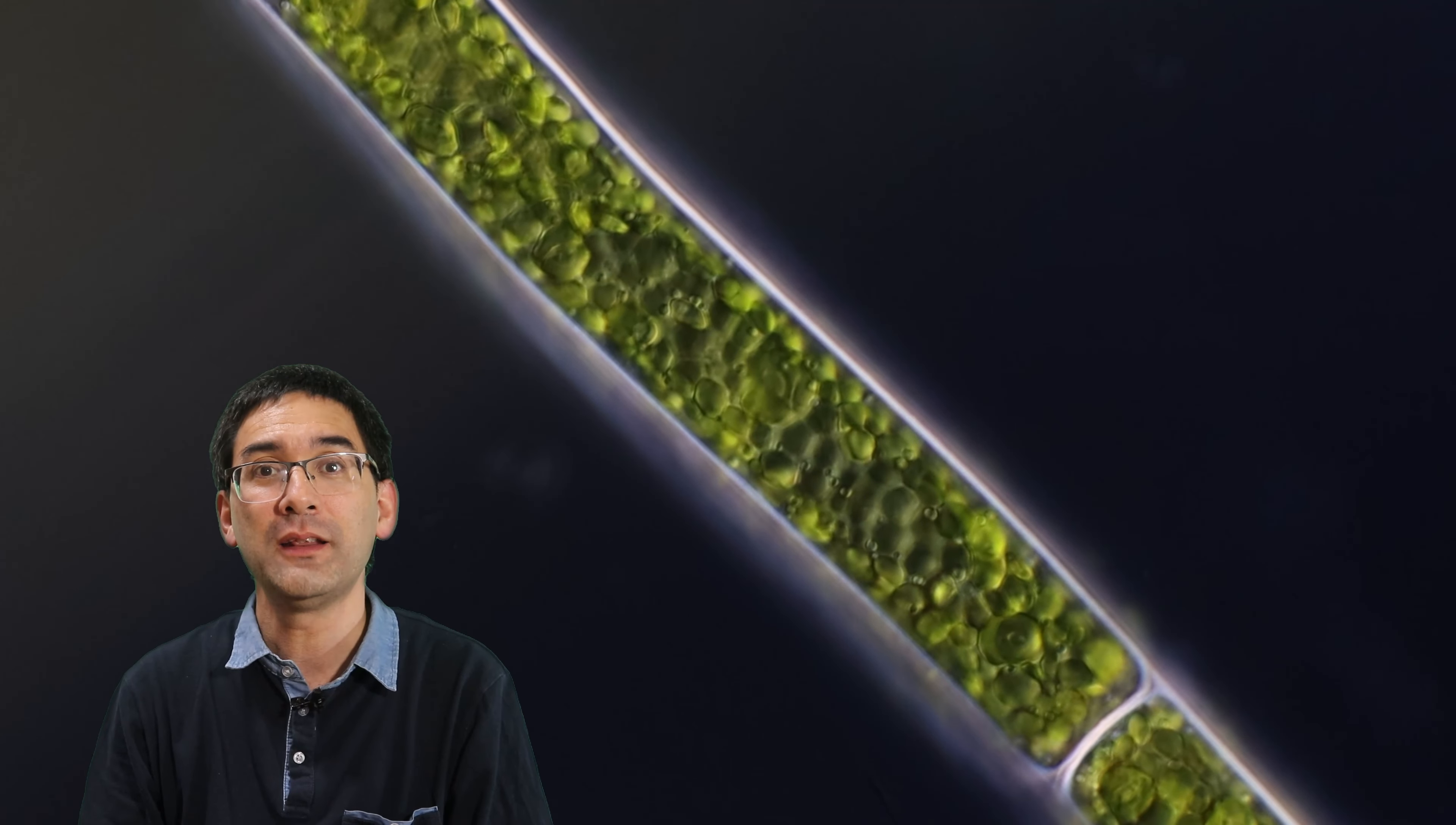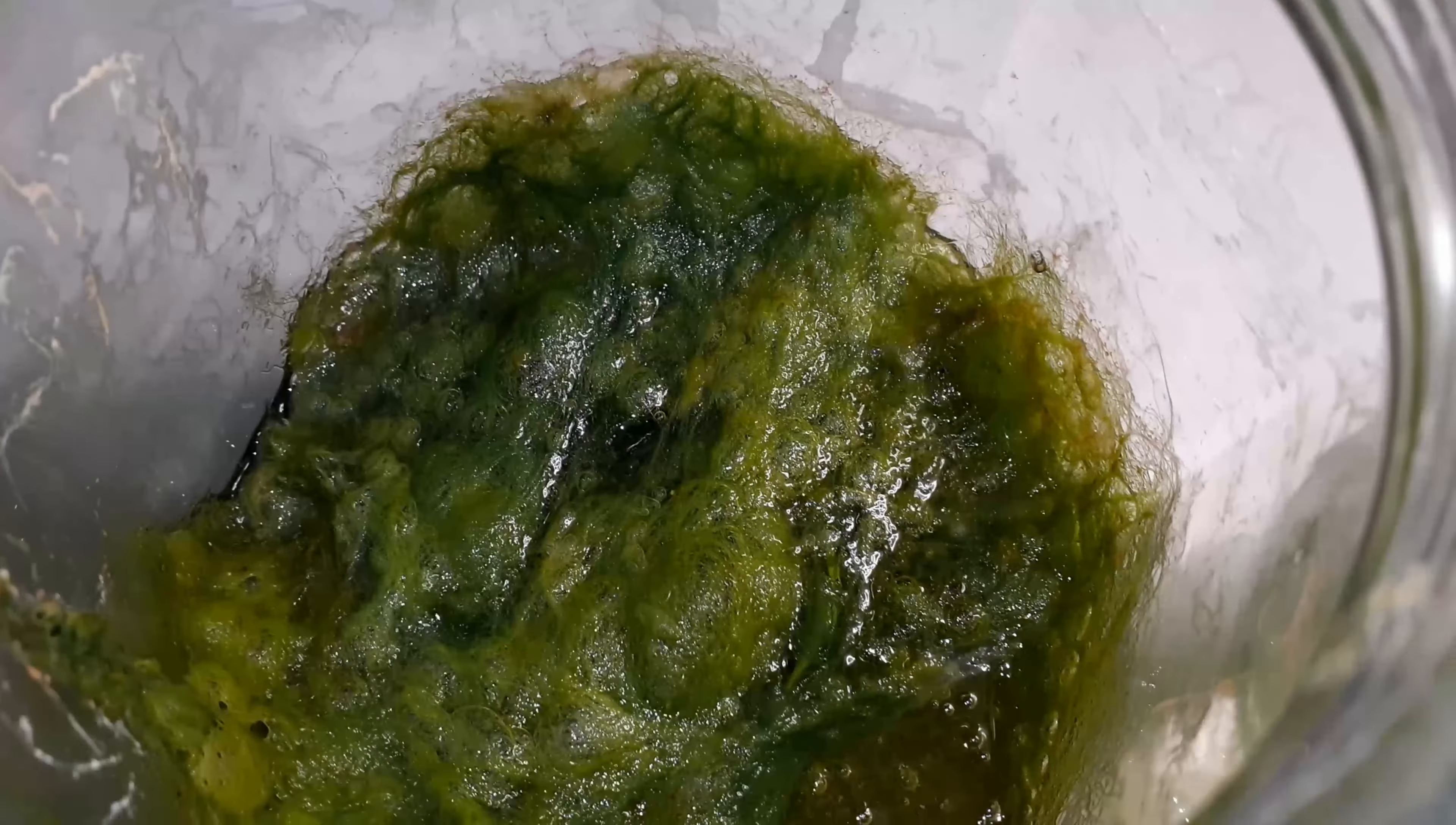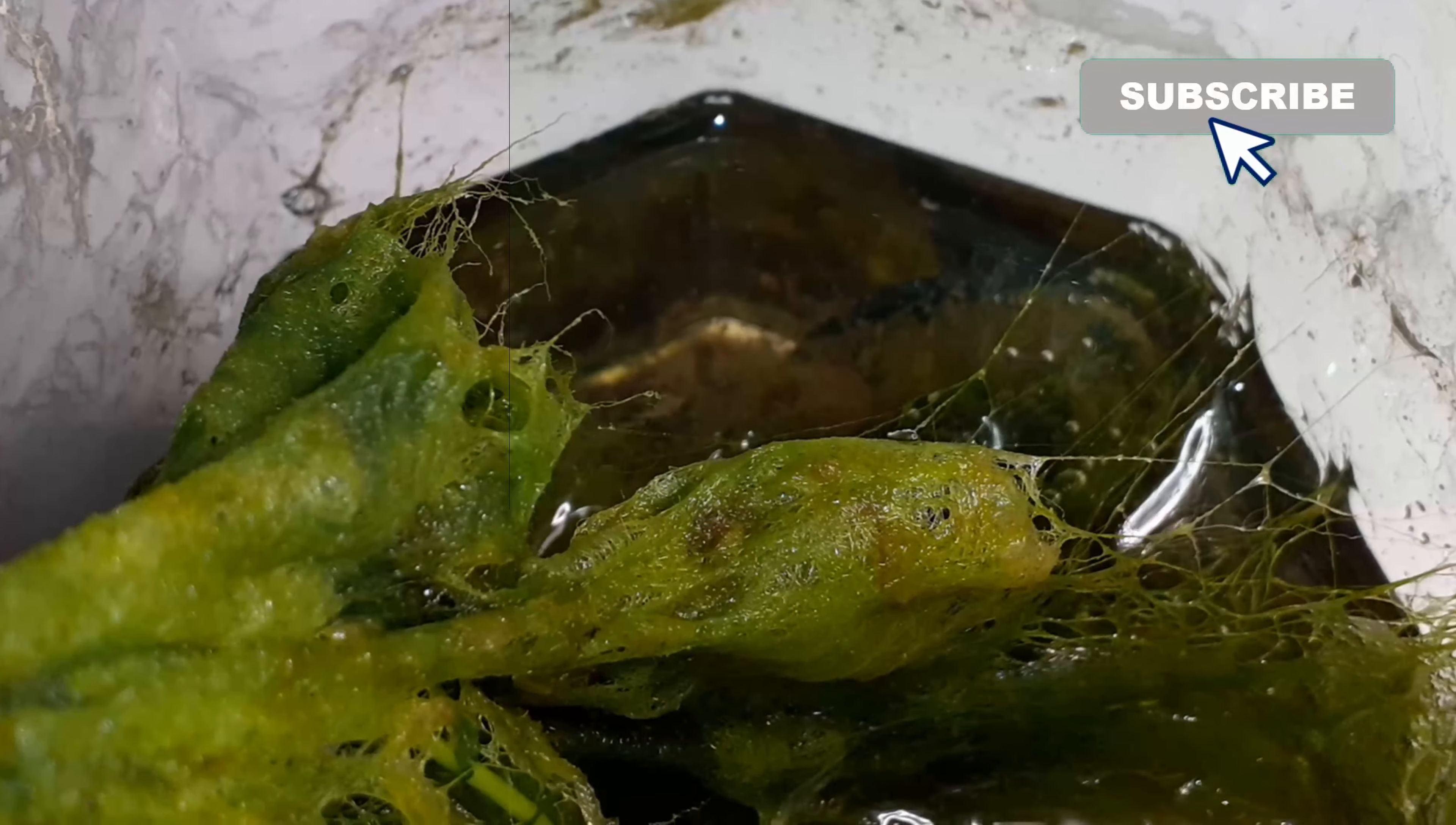These algae look pretty, but they can be a significant problem if too many of them start to grow in ponds and lakes. They sometimes form so-called algae mats, like you can see over here, and they cover the complete surface of the water.